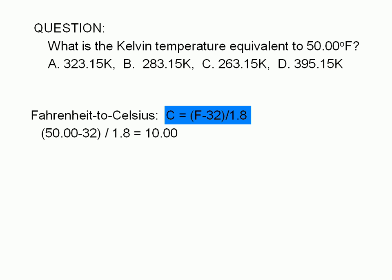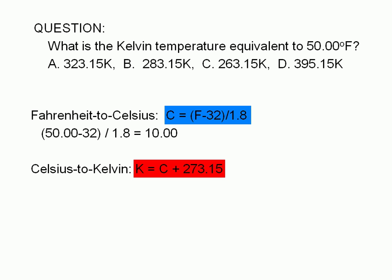Putting in 50.00 degrees Fahrenheit into this formula gives 10.00 degrees Celsius. To convert Celsius to Kelvin, we simply add 273.15 to the Celsius reading. 10.0 plus 273.15 gives us 283.15. Therefore, the answer is B. 50.00 degrees Fahrenheit is equivalent to 283.15 Kelvin.